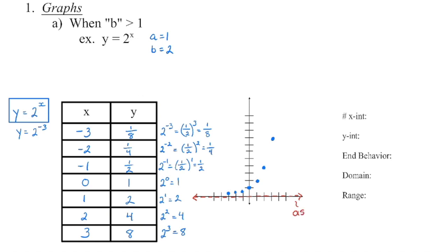This is what we call the asymptote. We know in order to be a function we can never have a straight vertical line, so when we connect the graph we're going to get closer and closer to that asymptote but never touch it. We're also never going straight up, so we angle the graph. That's what we have for an exponential function where b is greater than 1. The graph is never going to cross the x-axis because the asymptote lies there, so we will never have any x-intercepts.